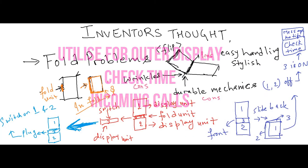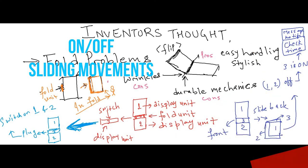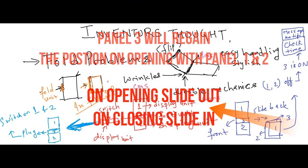Sliding on and off can be controlled. That is, it may not slide while closing the state. Similarly, while opening the fold, the outer display will again align with the other two display panels.